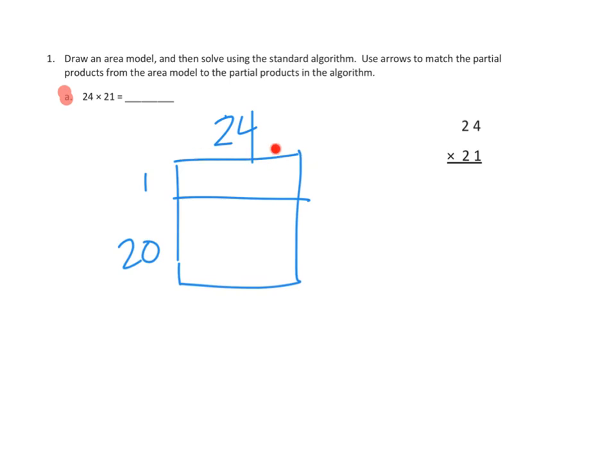This is our classic area model. This side is 21, this side is 24, but we're going to split up the 21 into two parts, multiply to find those areas, and then add up our partial products.